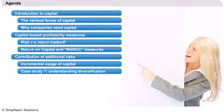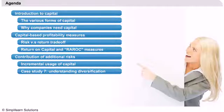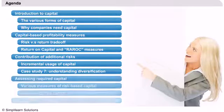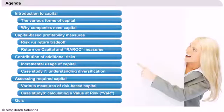Once we have established the important link between profitability and risk, we will examine the impact on capital of risks and diversification. We will look at an example through case study 7 and explore the concept of incremental capital. Finally, we will learn about objective measures of capital, with one of our central metrics being the Value at Risk.